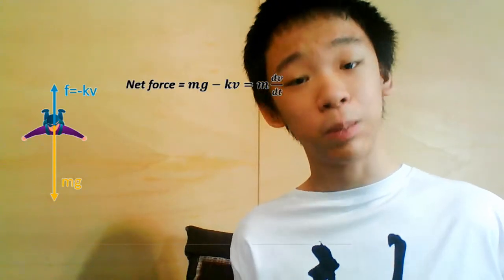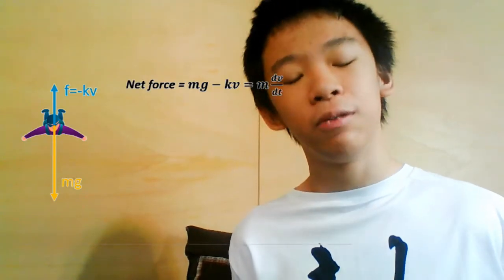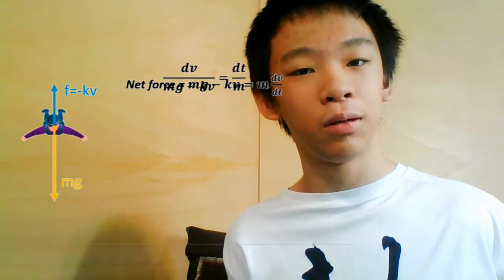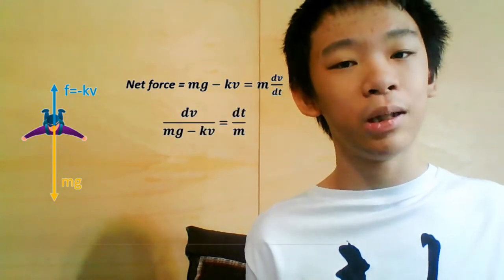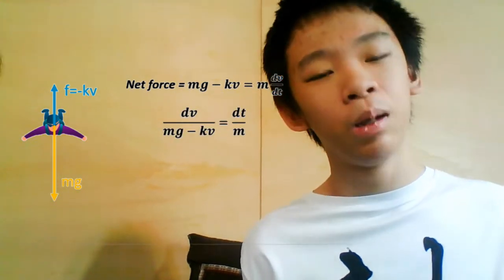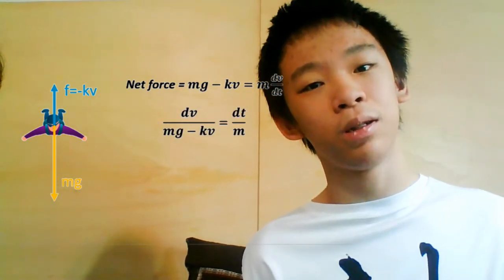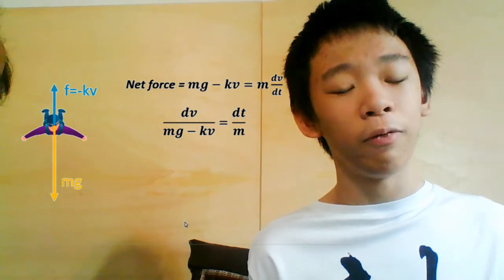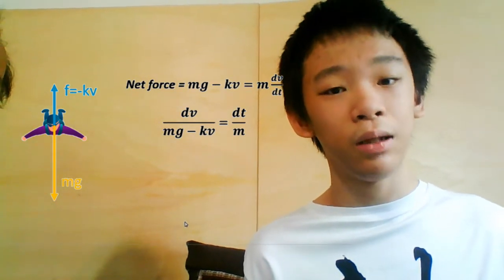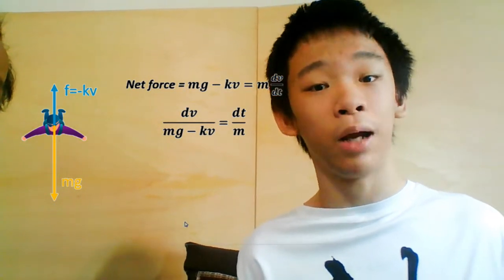This is a first order, separable, ordinary differential equation, which we can solve by moving the V terms to the left and the t terms to the right. So we get dV over (mg minus kV) equals dt over m.